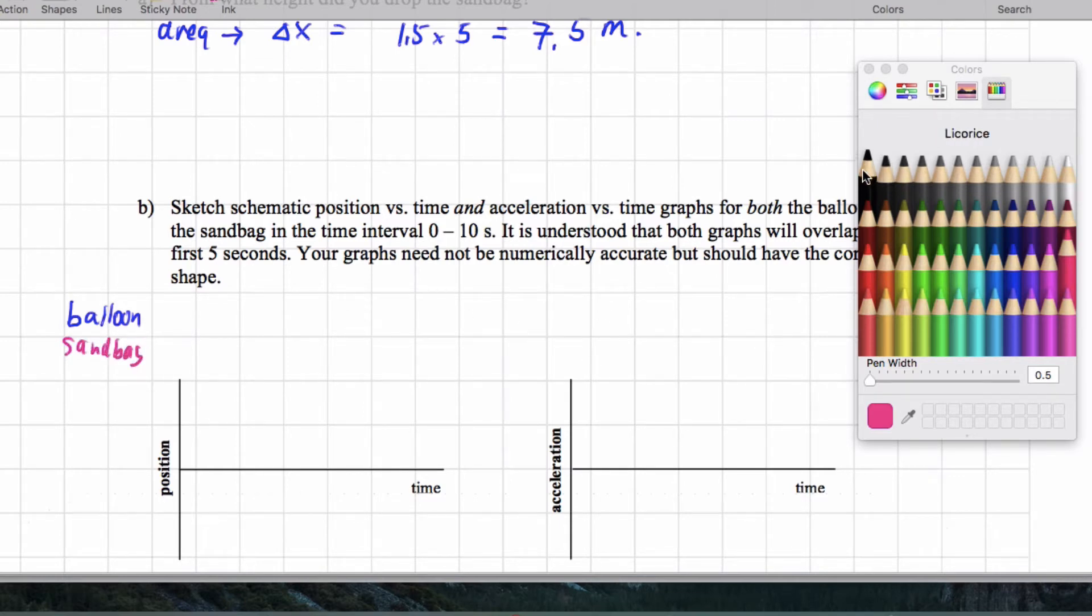So for the position versus time, again for the first five seconds, we're going to go from 0 to 7.5. And for the balloon, what we'll see, I'll actually draw like this, so like this, and then we'll see that the balloon position goes, it should curve upwards as a parabola. And what we're going to see for the sandbag is that it has a similar slope there, but then it actually starts falling towards the ground,